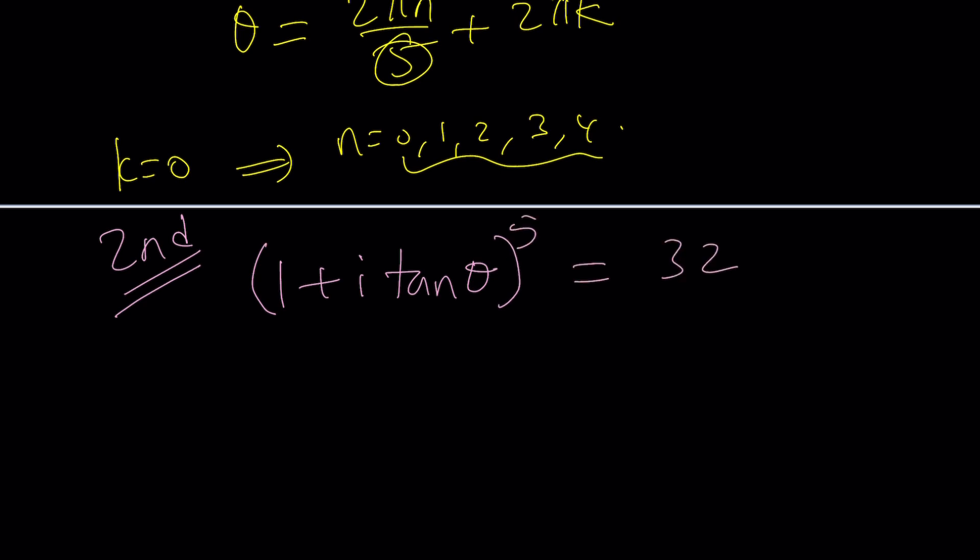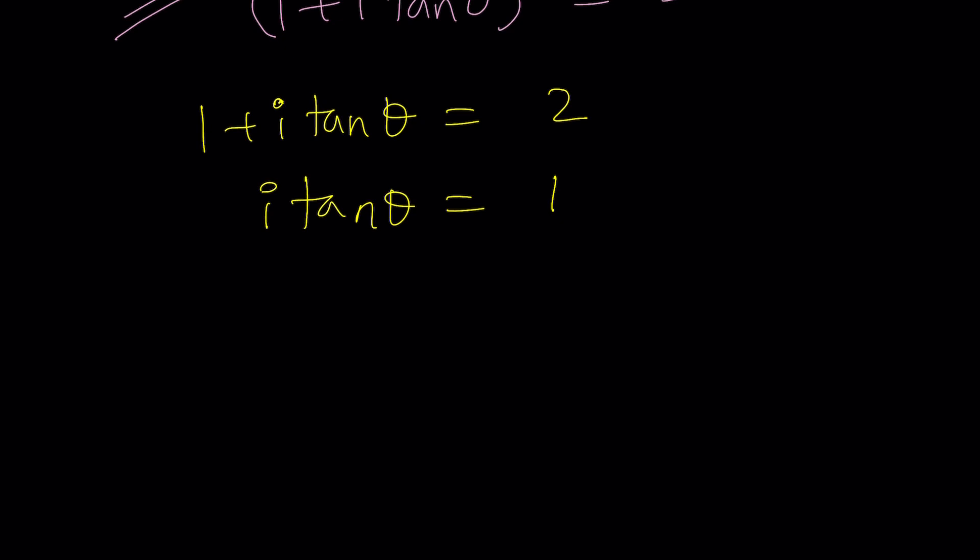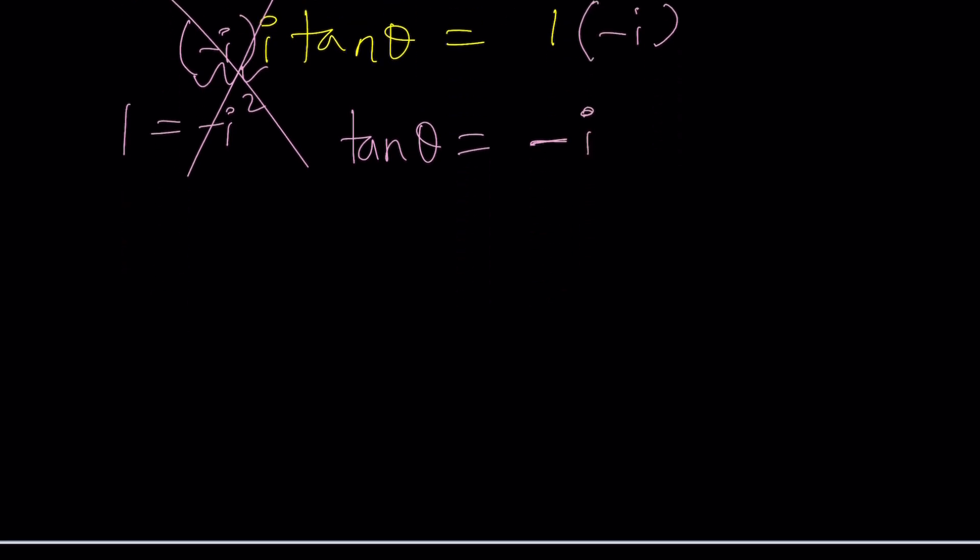I'm going to do a more direct approach and just take the fifth root. You're going to get one plus i tan theta equals two. This is one of the solutions, if there's a solution. From here, we get i tangent theta equals one. You can multiply by negative i, which gives you negative i squared, but negative i squared equals one. So that cancels out. This gives us tangent theta equals negative i.